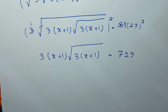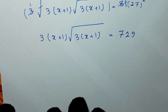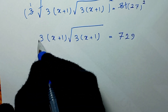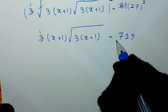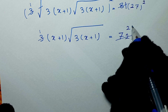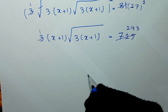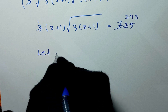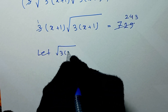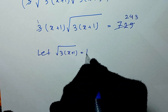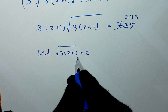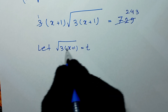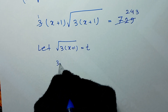27 squared is 729. In the next step, we divide both sides of the equation by 3 — this gives 243. In the next step, we let t equal square root of 3 times x plus 1. We raise both sides of that equation to the power of 2, giving us 3 times x plus 1 equals t squared.